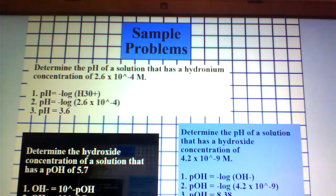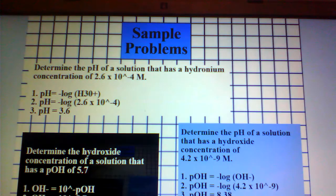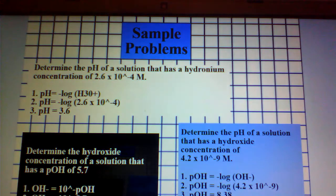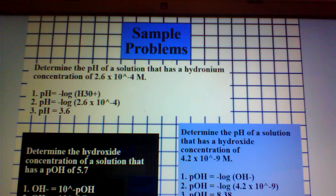Here are some sample problems regarding hydronium and hydroxide ions. To determine the pH of a solution that has a hydronium concentration of 2.6 times 10 raised to the power of negative 4, we first recall that pH is equal to the negative log of the hydronium ion. We plug in our hydronium concentration — 2.6 times 10 raised to the power of negative 4 — and calculate that the pH is equal to 3.6.